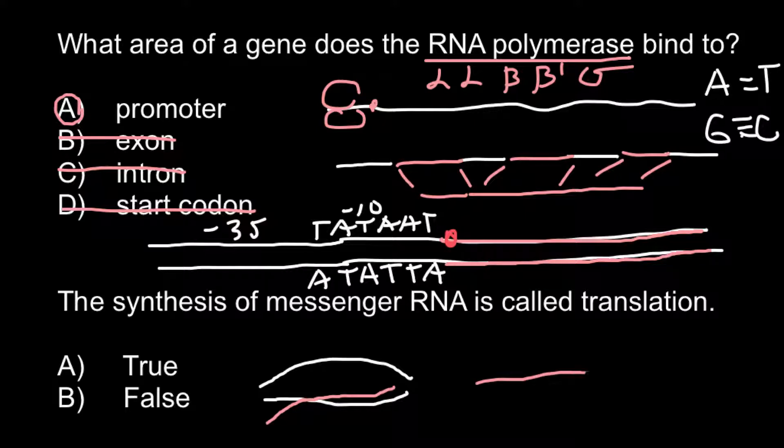And when messenger RNA would be produced, with the help of the ribosome, protein would be produced, which represents a sequence of the amino acids that is coded by sequence of the messenger RNA sequence of its codons. So this process we call transcription and this process we call translation. So the synthesis of the messenger RNA is called transcription. So in our case this statement is going to be false.